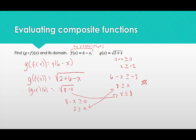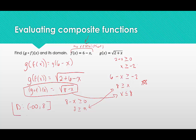We need to write the domain of g of f of x. Our restriction is x ≤ 8, so the domain goes from negative infinity to 8, closed at 8. We don't need to worry about the -2 restriction separately, because we only needed to worry about restrictions on f — and there were none. So the domain is (-∞, 8].